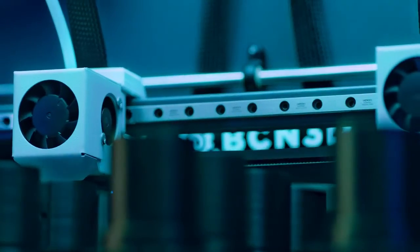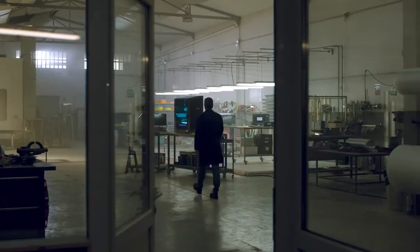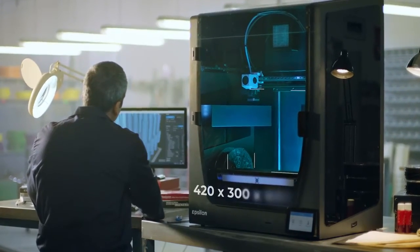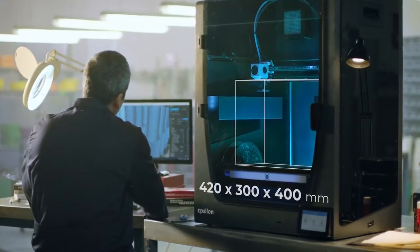The BCN 3D Epsilon features one of the largest build volumes on the market, enabling you to print larger models and bigger parts with a wide range of materials.